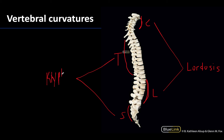You can certainly have an over-curvature in these regions, but the normal curvature also carries these names. It would be excessive or extreme lordosis or kyphosis when we're talking about a more pathological condition.